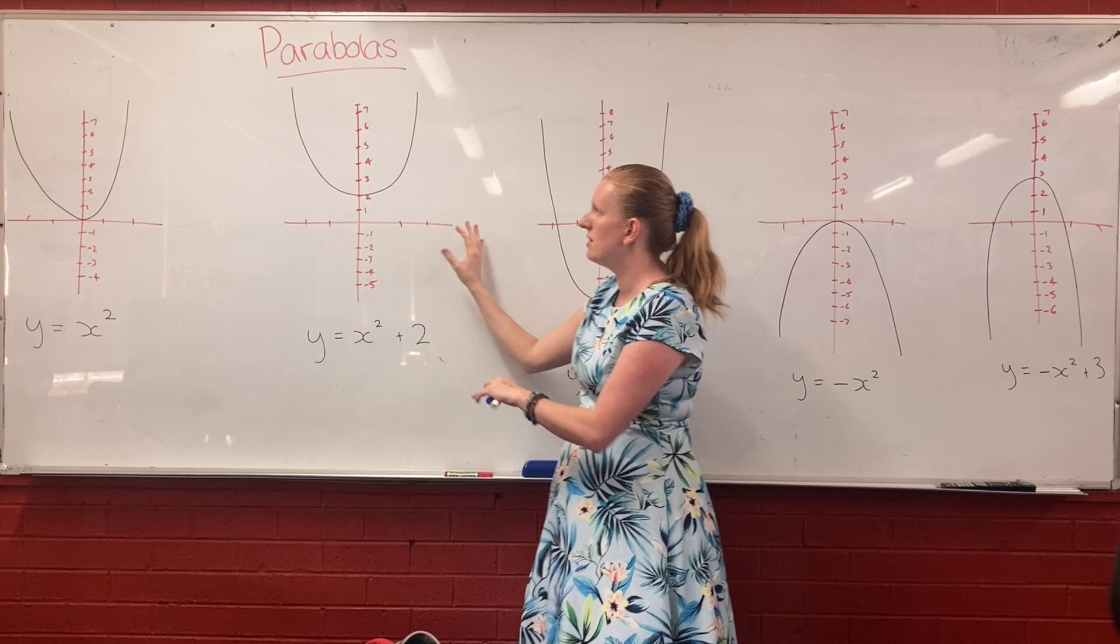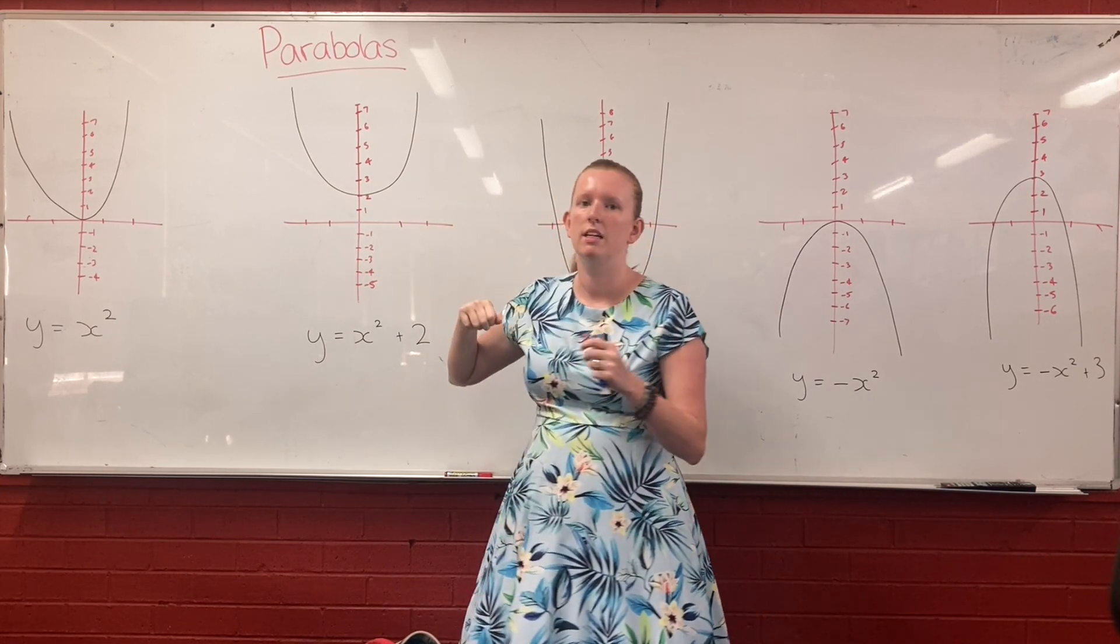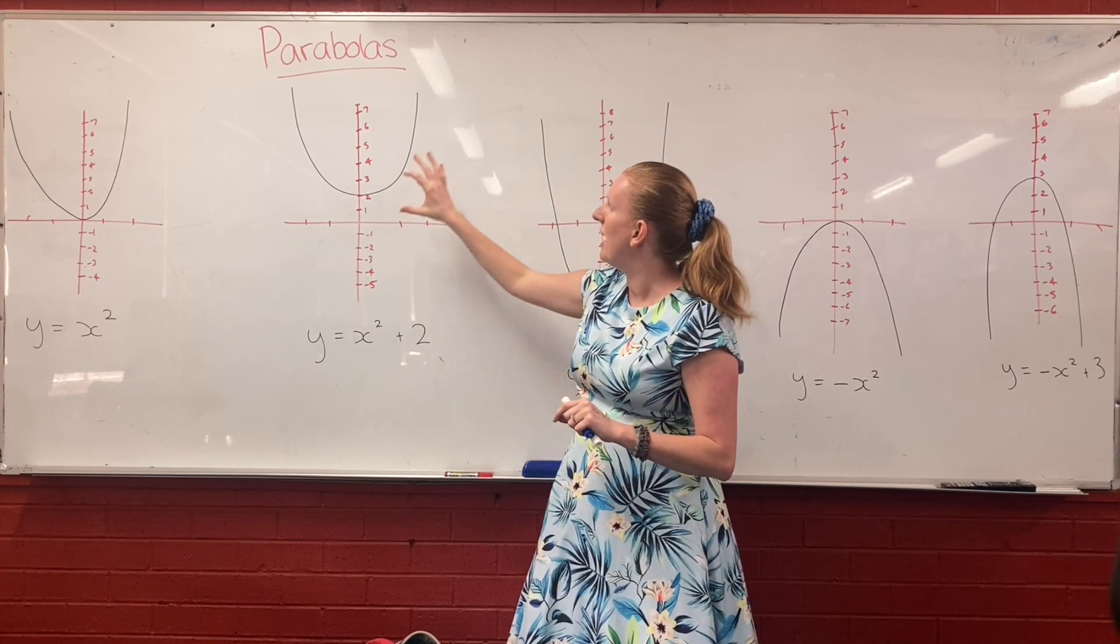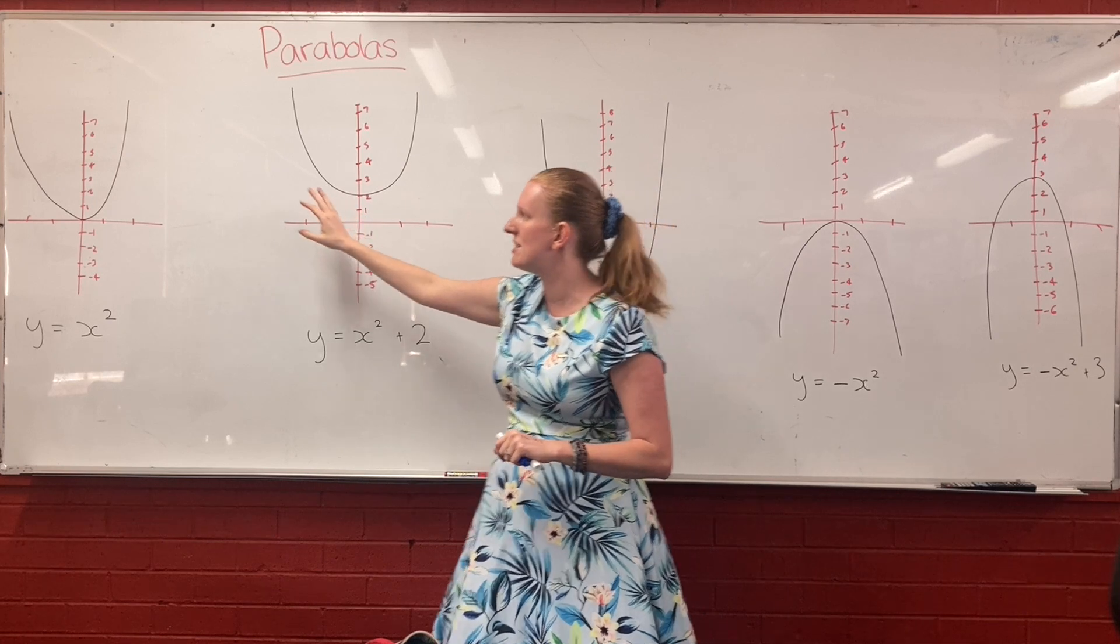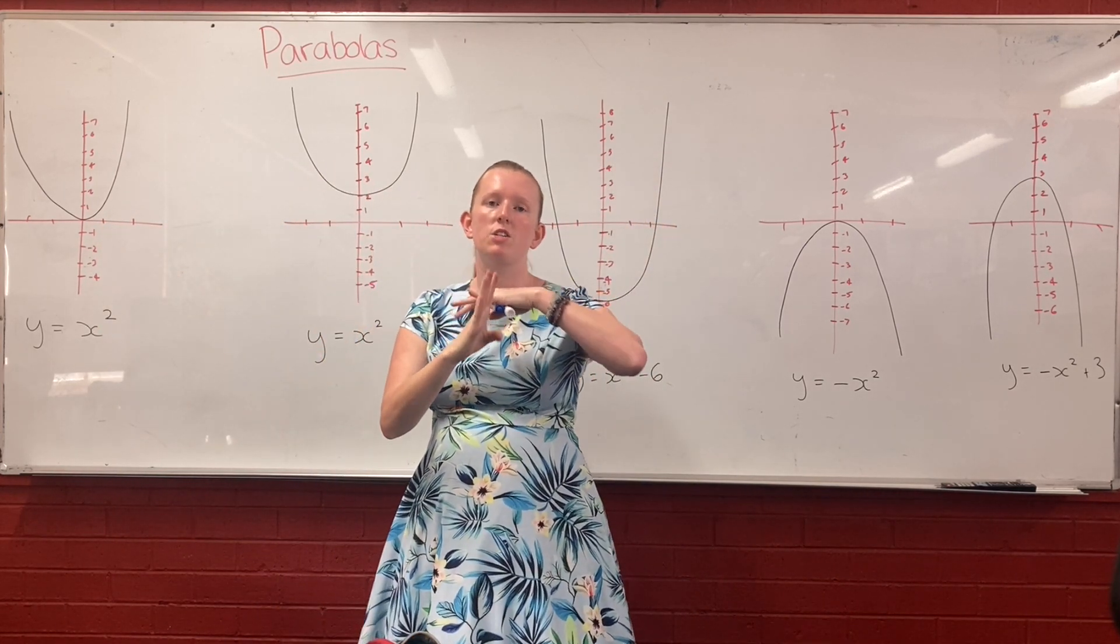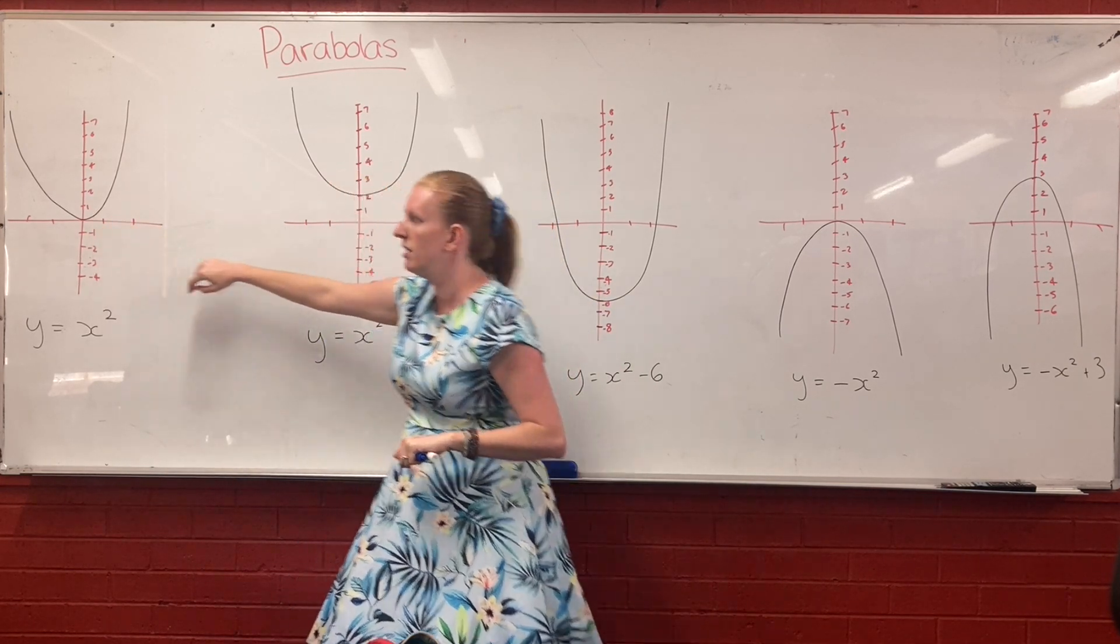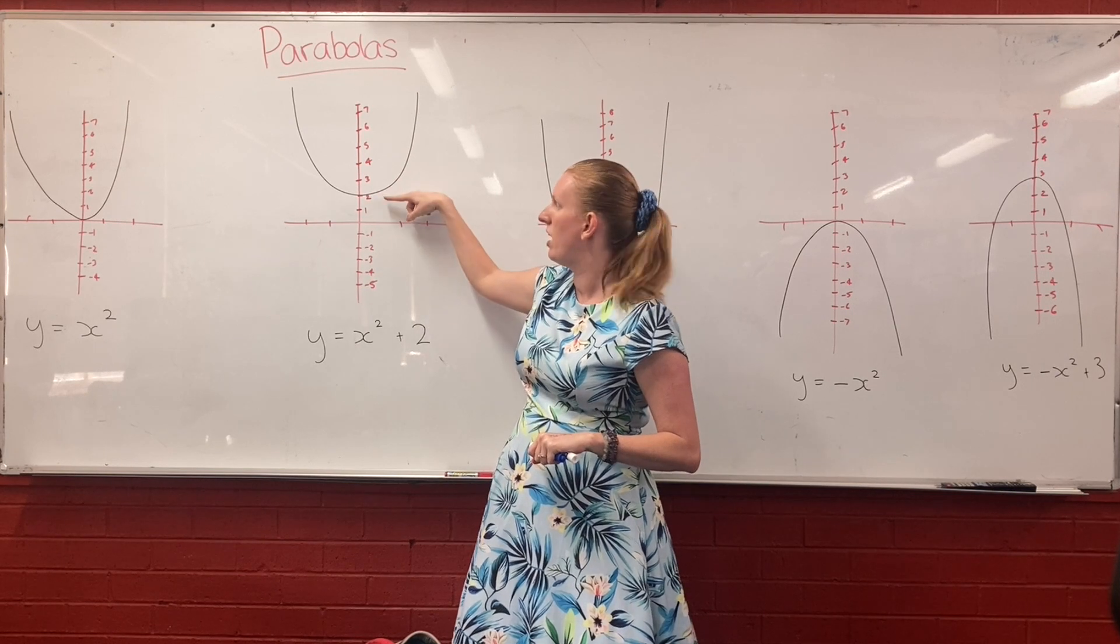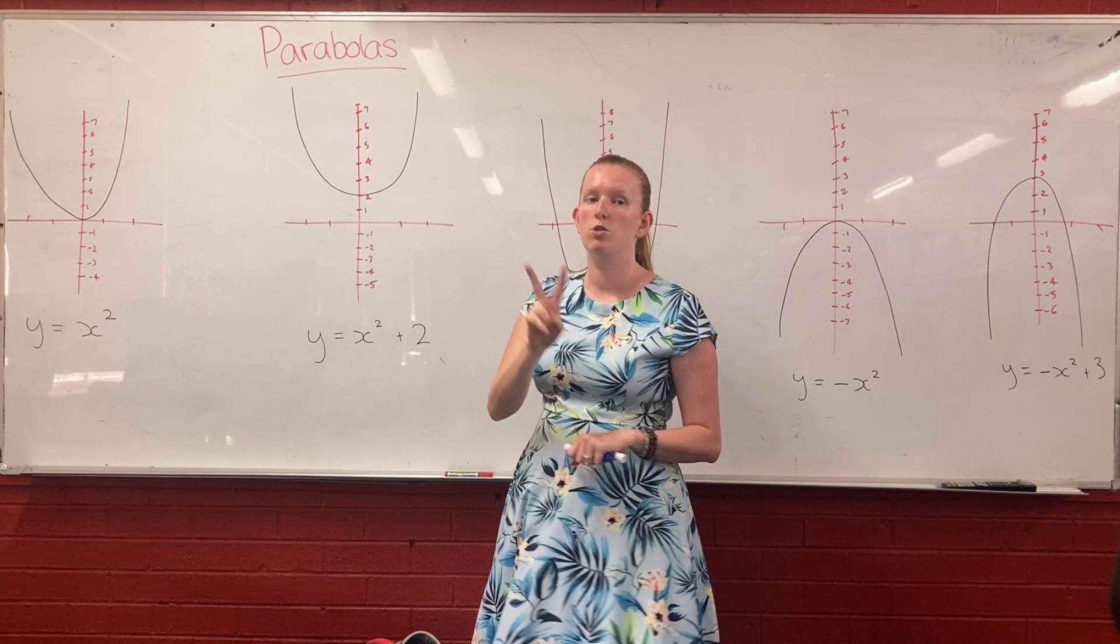So you'll notice that this parabola here, it's the same shape, please excuse my awful drawing, it is the same shape as the other one, but the thing that's different is instead of touching at the origin, which is the center of the Cartesian plane, like where the cross happens, instead of touching at 0, 0, it's touching our y-axis at positive 2. So this parabola has just been moved up two spots.